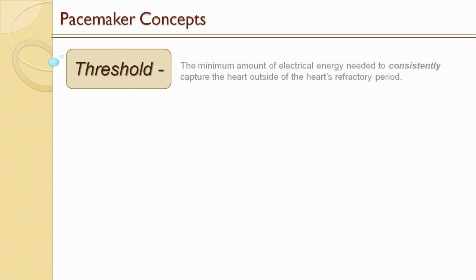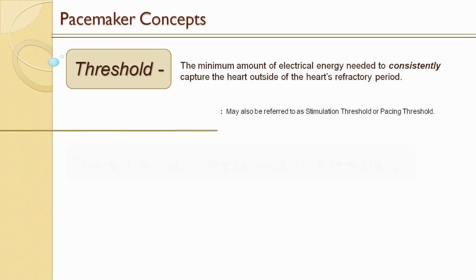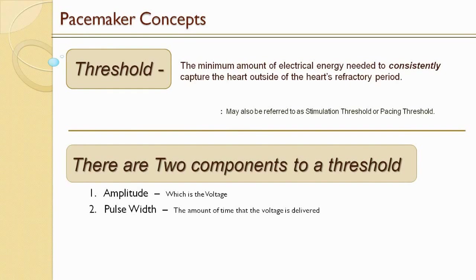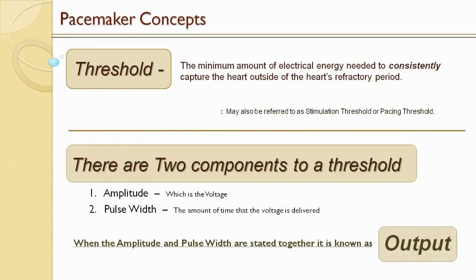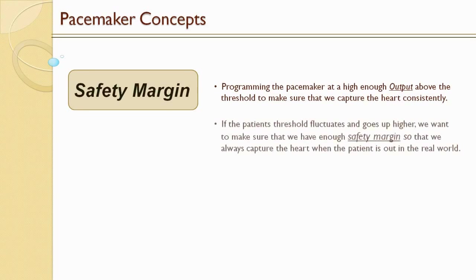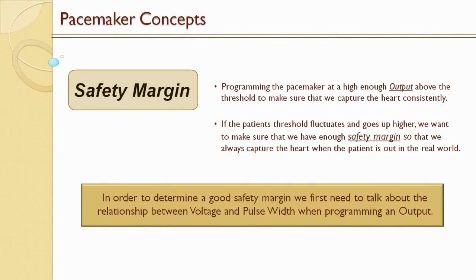Threshold is the minimum amount of electrical energy needed to consistently capture the heart outside of the heart's refractory period. It may also be referred to as stimulation threshold or pacing threshold. There are two components to a threshold: amplitude, which is the voltage, and pulse width, which is the amount of time that the voltage is delivered. When amplitude and pulse width are stated together, it's known as the output. Safety margin is programming the pacemaker at a high enough output above the threshold to make sure that we capture the heart consistently. If the patient's threshold fluctuates and goes up higher, we want to make sure we have enough safety margin.